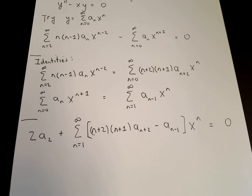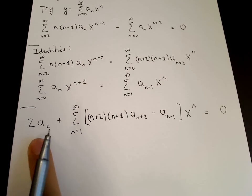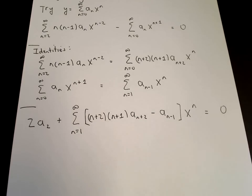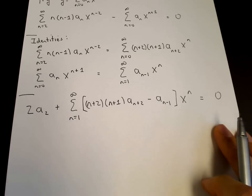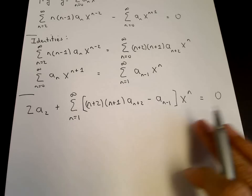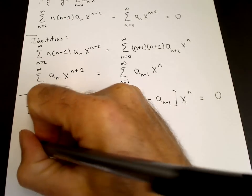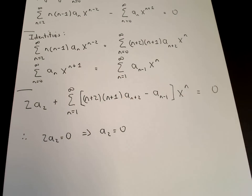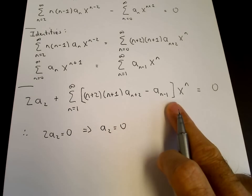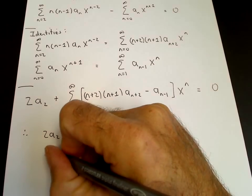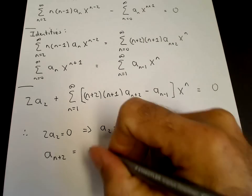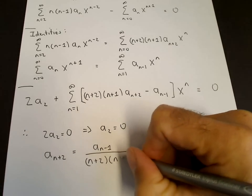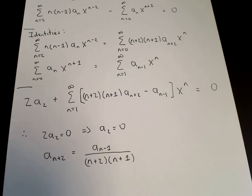This equals zero, so since the left-hand side is a power series equal to zero, all coefficients must individually equal zero. From the constant term we get 2a₂ equals zero, so a₂ equals zero. From the bracket term we get our recurrence relation: a sub n plus two equals a sub n minus one divided by (n plus two)(n plus one).